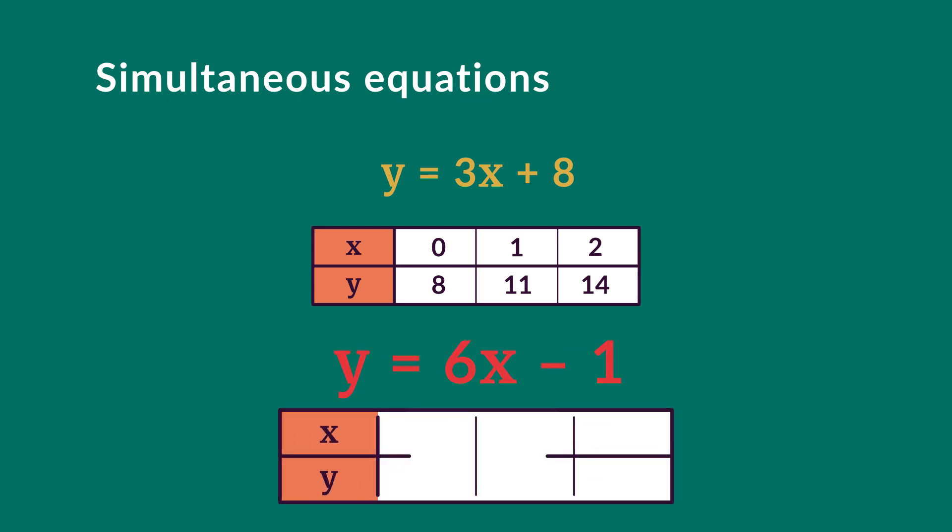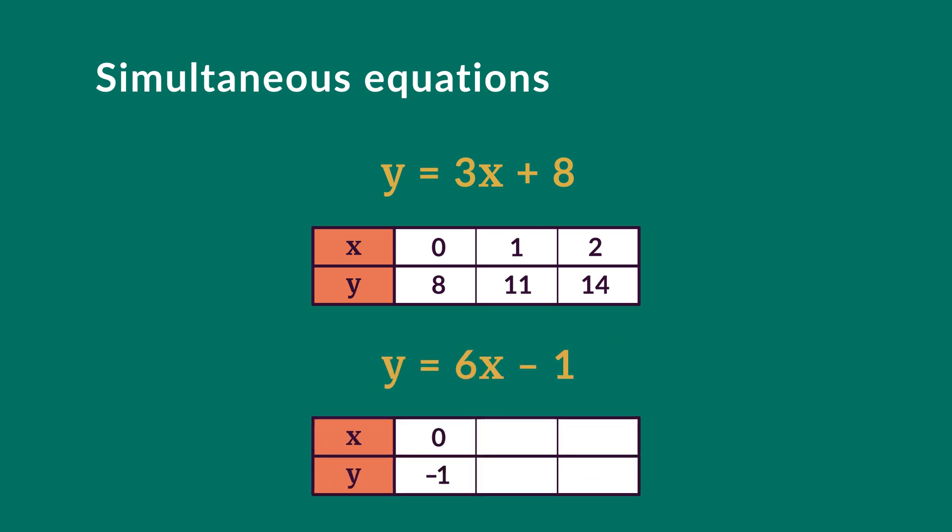For the equation y equals 6x minus 1, the points are (0, -1), (1, 5), and (2, 11).